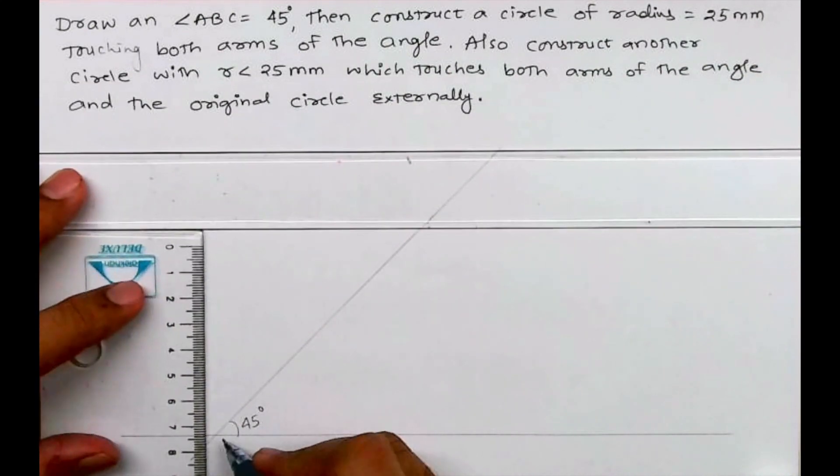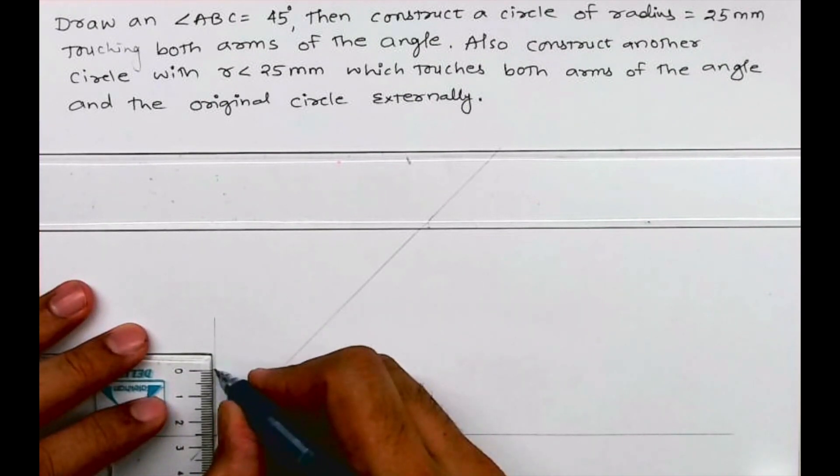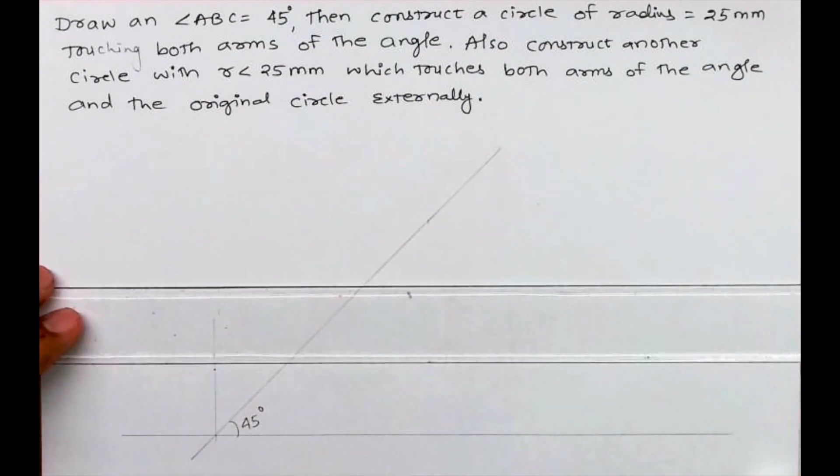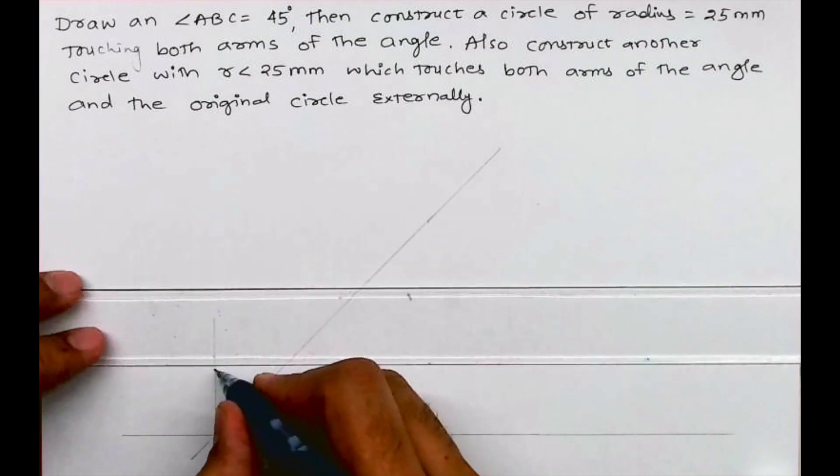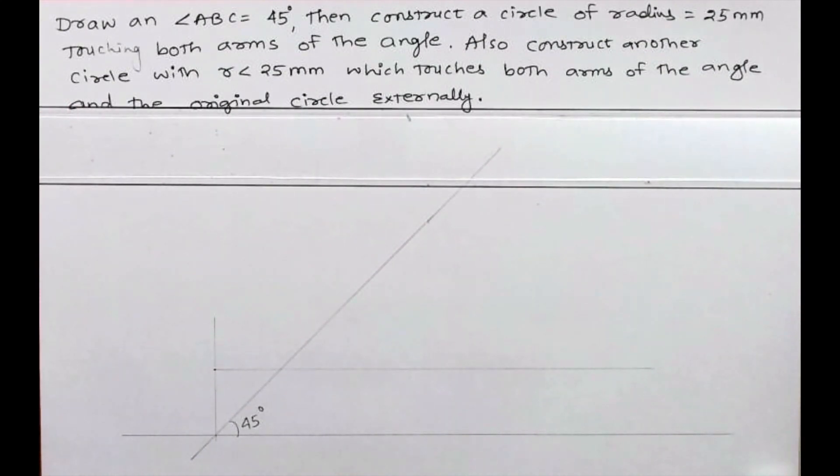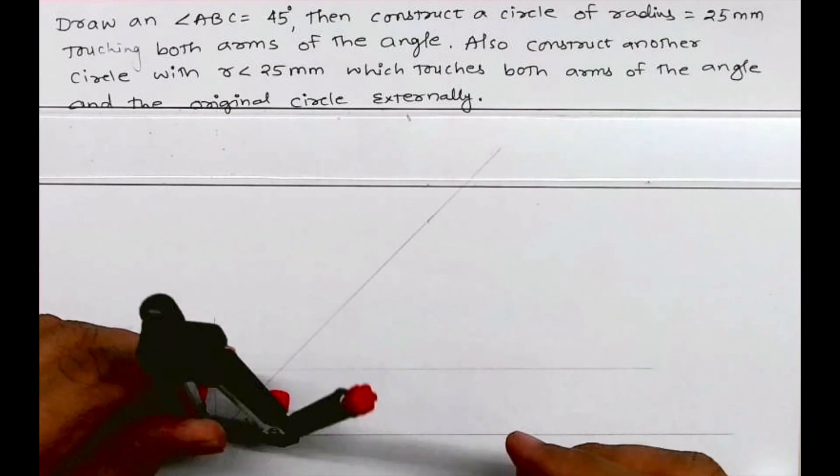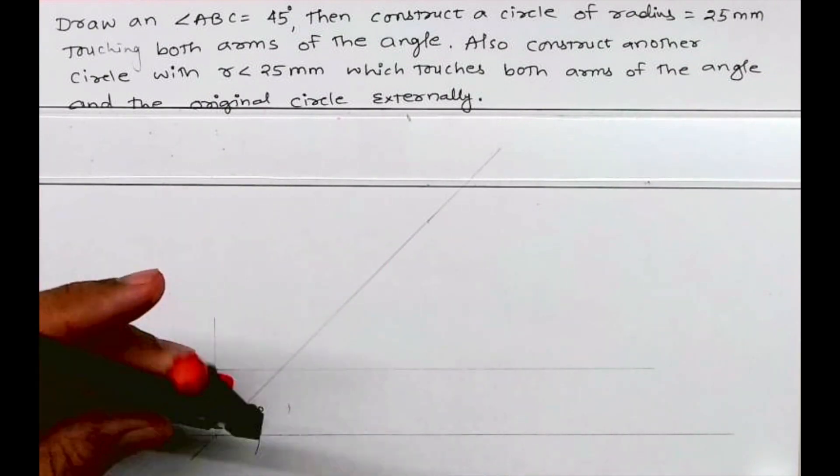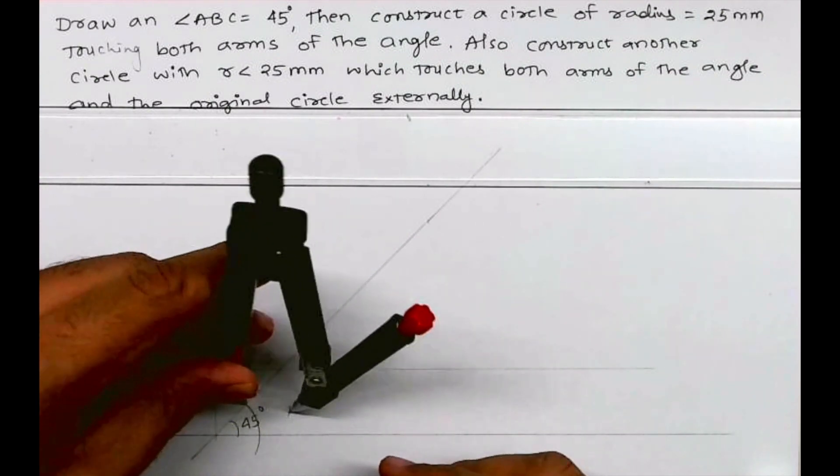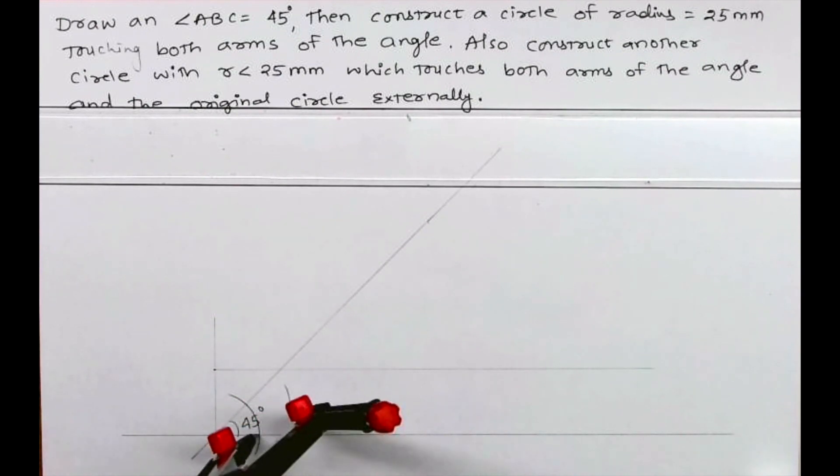Now you take radius 25mm, so from here you go up by 25mm and draw a horizontal line. Draw the angle bisector, so we are bisecting this angle. Wherever it will intersect with that 25mm line, that will be the point and from that point we can draw a circle.